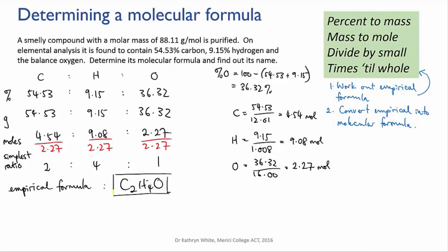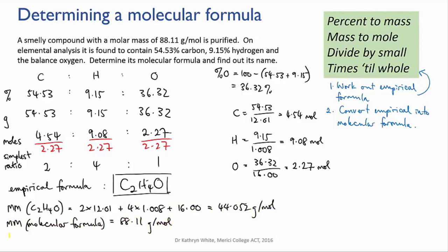Next we need the molar mass of that empirical formula. And that gives us 44.052 grams per mole. And now I divide the true molar mass by the empirical molar mass, 88.11 over 44.052, and that equals 2. So that means I need to multiply the empirical formula by 2.